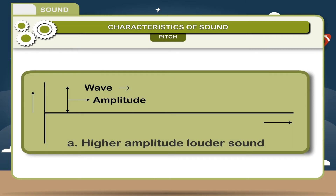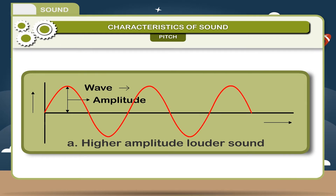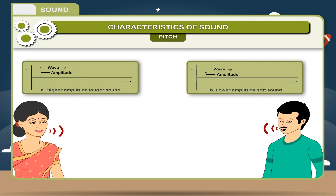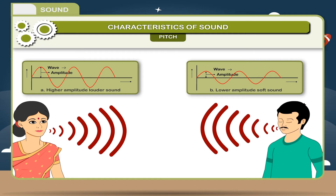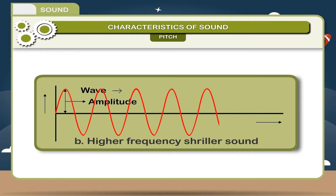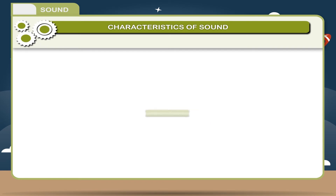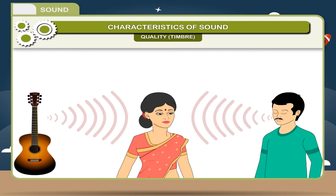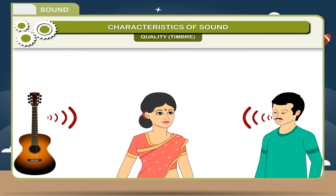Pitch is the characteristic of sound which distinguishes a shrill sound from a flat sound. Pitch depends upon the frequency of sound — if the frequency is high, the pitch is also high. That is why a female voice is shriller than a man's voice. Figure B represents high pitch because of high frequency. Quality/Timbre is the characteristic which differentiates between sounds produced by two instruments having the same pitch and loudness.